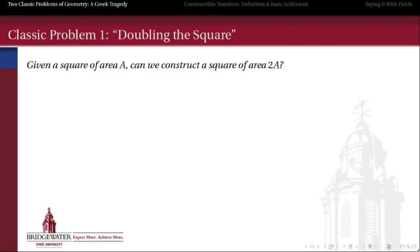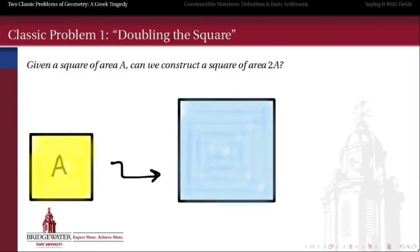So the classic problem that motivates this question is, can we double a square? In other words, if I have a square drawn on a piece of paper and an area of that square is A, can I, using only a compass and a straightedge, construct another square whose area is twice as large as the first one? Well, again, it depends on what the meaning of the word construct is.